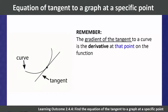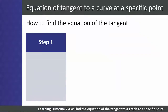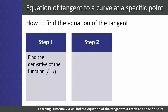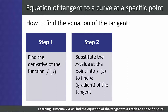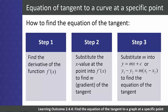For learning outcome 2.4.4, remember from the previous module that the gradient of the tangent to a curve is the derivative at that point. To find the equation of the tangent: Step 1, find the derivative f'(x). Step 2, substitute the x-value of the point into the derivative to find the numerical gradient m. Step 3, substitute m and the coordinates into y = mx + c, or the gradient-point formula y₁ - y₂ = m(x₁ - x₂).